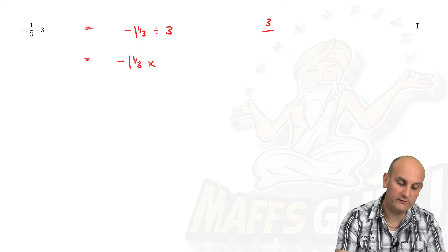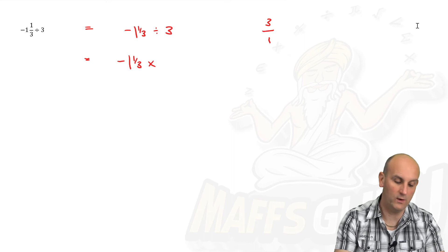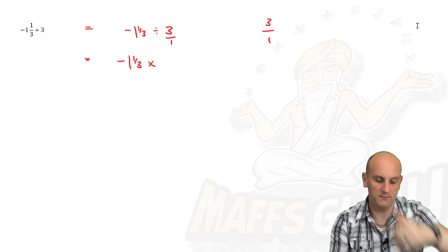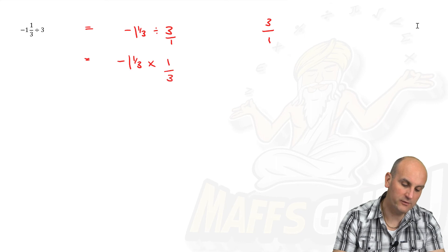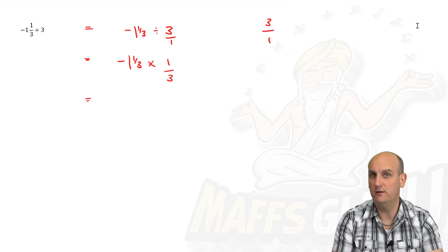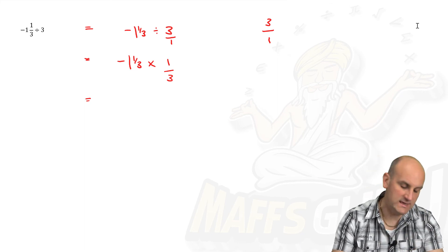Well, if you remember, any whole number is the same as the whole number divided by one. So that's the same as three on one. And when we flip, we flip them over. So one goes on the top and three goes on the bottom. Okey dokey. That's fine. I've got a mixed number. So what am I going to do? I'm going to turn it top heavy.